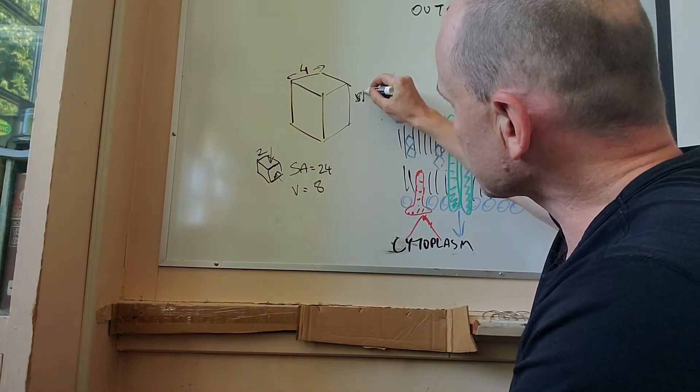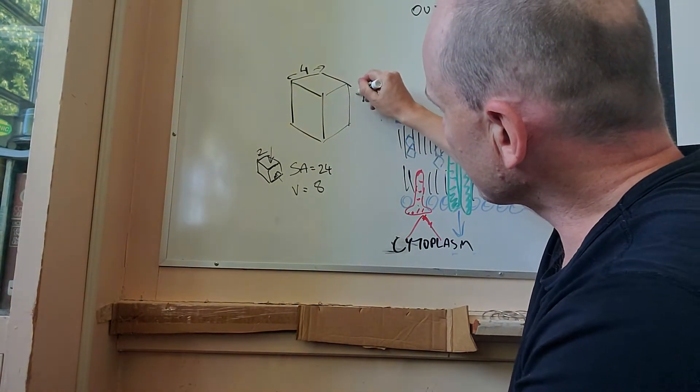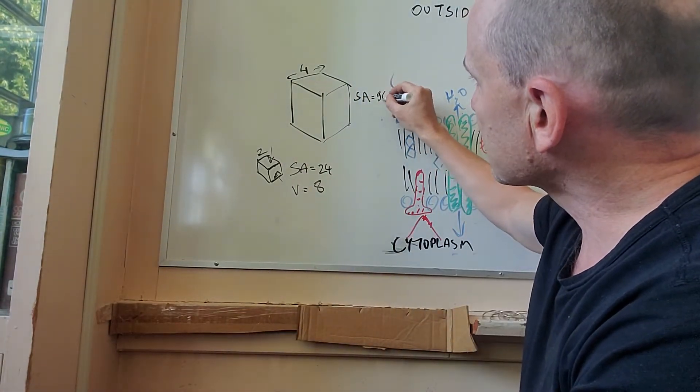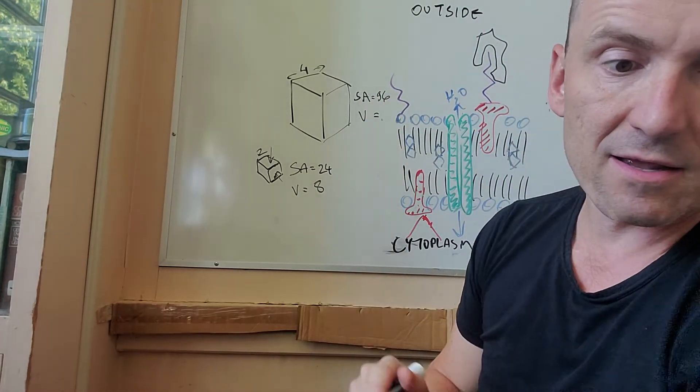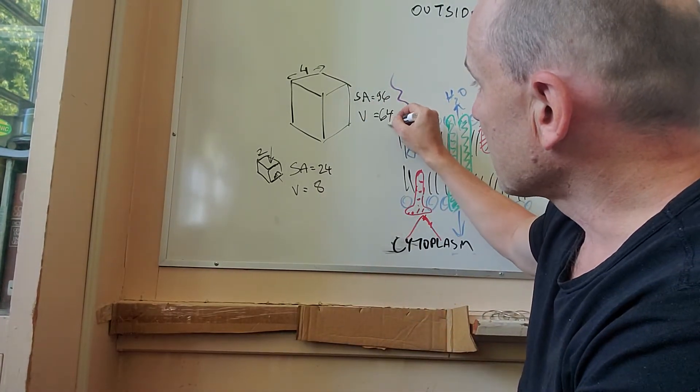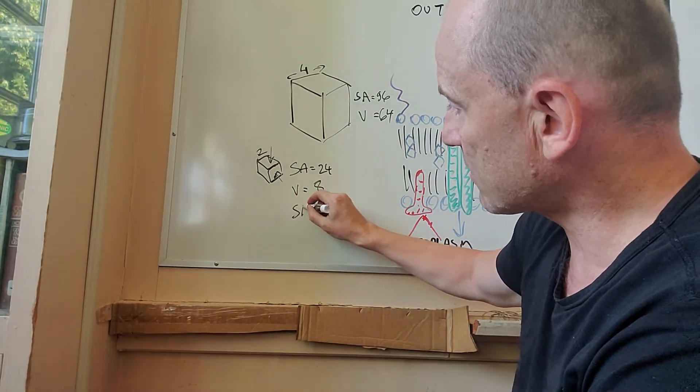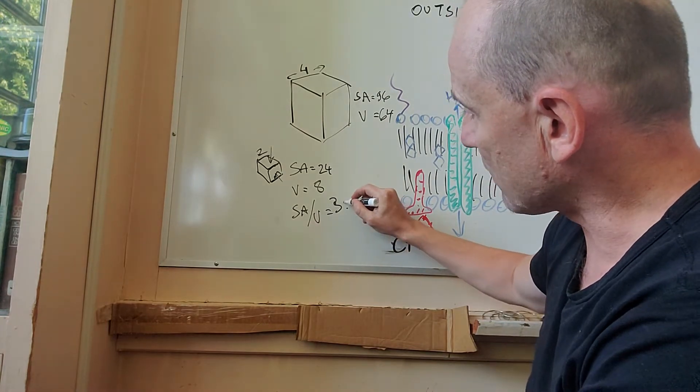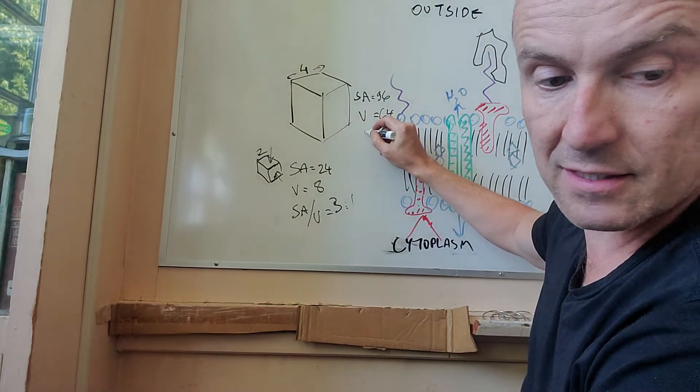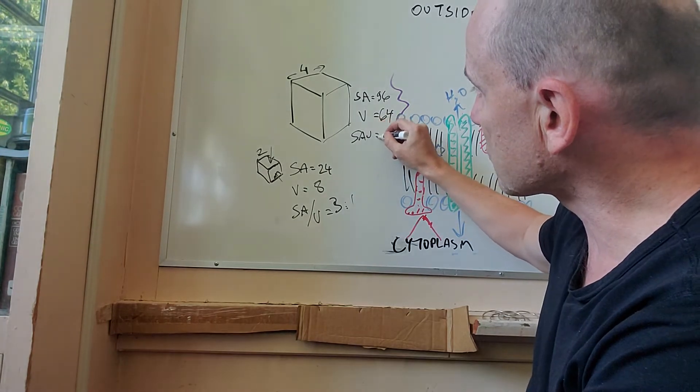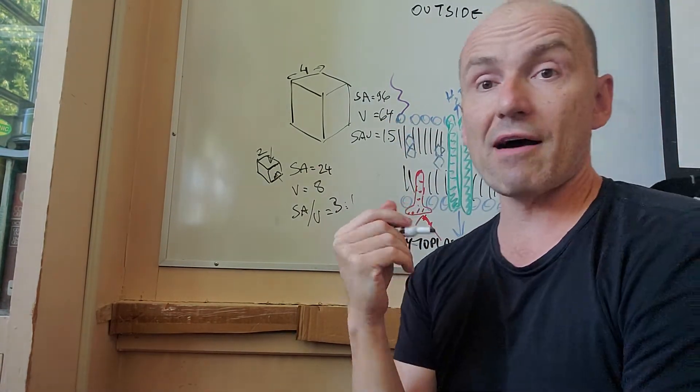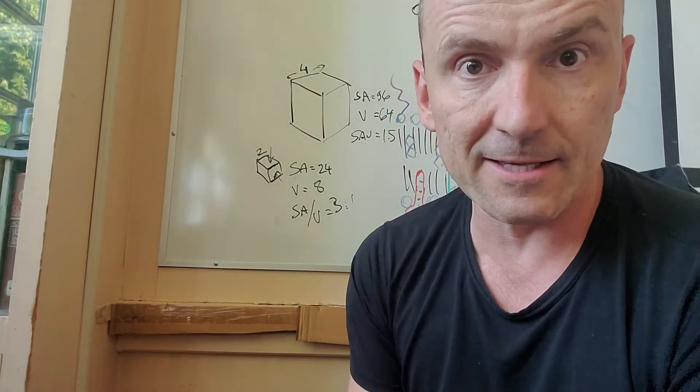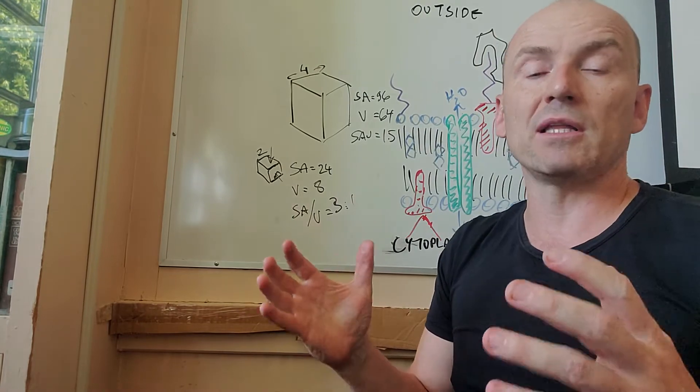The surface area for our cube where the sides have doubled is 96 and the volume is 64. So what's happened is the surface area to volume ratio here is 3 to 1, and here the surface area to volume ratio is 1.5. So you have a lot less surface area on the large cube servicing a much larger volume, a lot more metabolism.